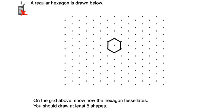Let's have a look at question number one. Question one says a regular hexagon is drawn below - we've got this isometric grid and a regular hexagon - and on the grid above, show how the hexagon tessellates. You should draw at least eight shapes. So we've got to draw eight more hexagons and show how this regular hexagon will tessellate.